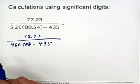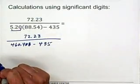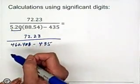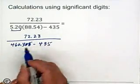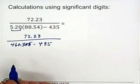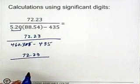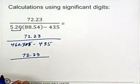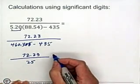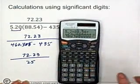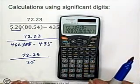Now we know that this answer has to have 3 sig figs because we're multiplying and our answer has to have the same number of sig figs as the number with the least number of sig figs. So this has got to be 460. So it's 460 minus 435. Our answer here is going to be 72.23 divided by 460 minus 435 is 25. We have 2 sig figs there. And we're going to take 72.23 and divide it by 25. And we get 2.889.